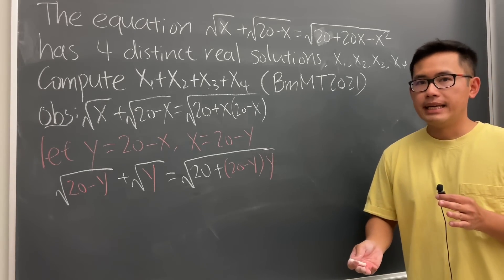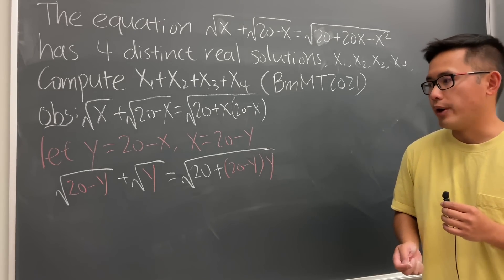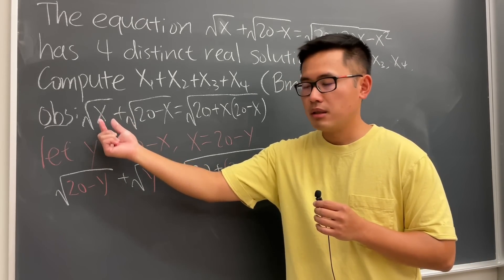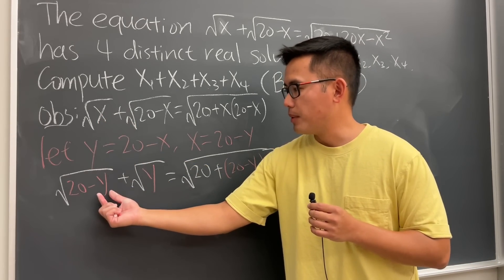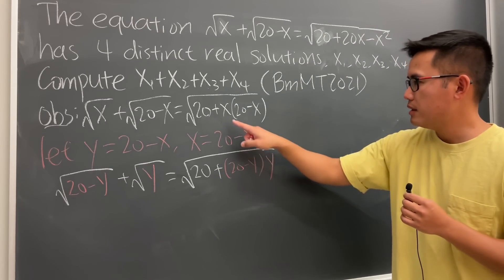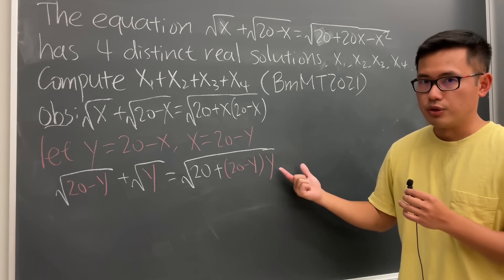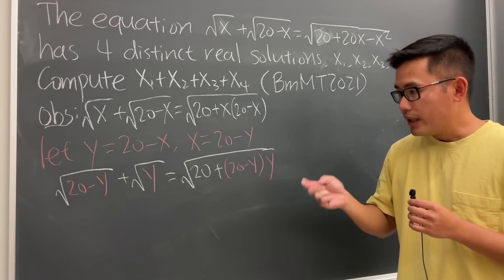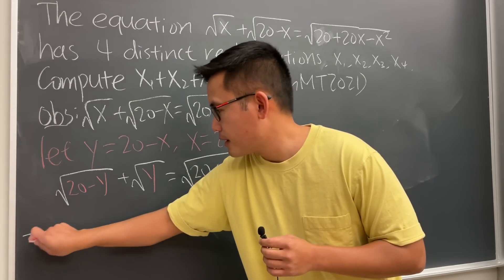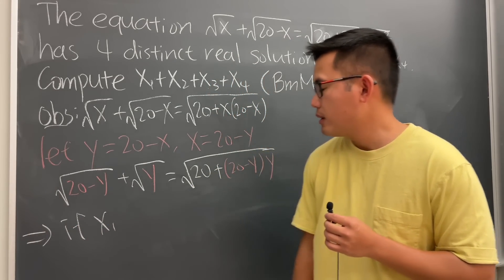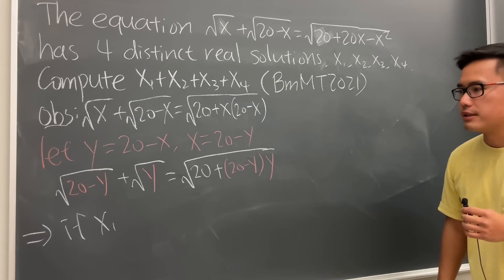Why? Because let's look at the structure of this equation. You see this input? It's square root of y. This is 20 minus the variable in the square root. And we have 20 and then the x. Well, I just used y here, but we have 20 minus the variable. So what this means is that if x1, let's just use this right here for example, is a solution.